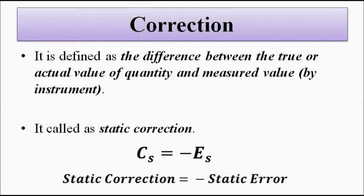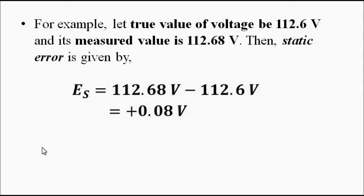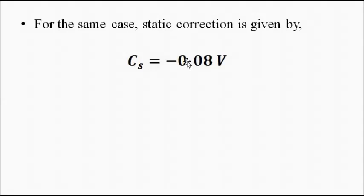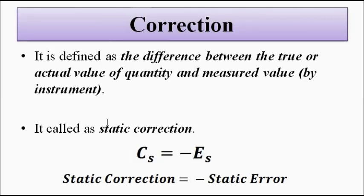Now we have to discuss correction. Correction is the opposite of error. It is defined as the difference between the true or actual value of the quantity and the measured value. It is simply the negative of the static error — the amount of correction we have to apply to the instrument so that the measured value and the true value are the same. For this case, since the error is plus 0.08 volts, the static correction will be minus 0.08 volts.